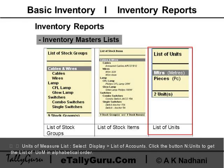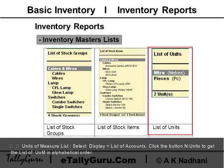Unit of Measure List: Select Display > List of Accounts, then click the button N Unit to get the list of units of measure in alphabetical order.